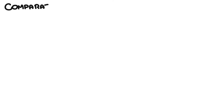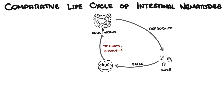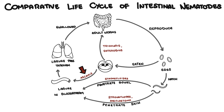Roundworms can be classified based on their life cycles. Group one roundworms attach and grow in the intestine soon after being ingested; these include trichuris and enterobius. Group two roundworms first penetrate the venous system either via the skin or via the intestine, then enter the lungs and migrate up the bronchi to the trachea, where they are swallowed again into the intestines. This group includes ascaris, strongyloides, and the hookworms ancylostoma duodenale and necator americanus.